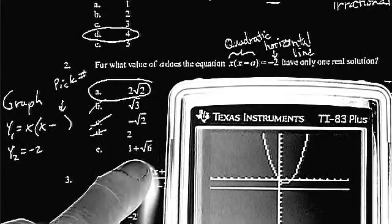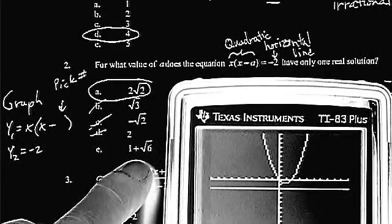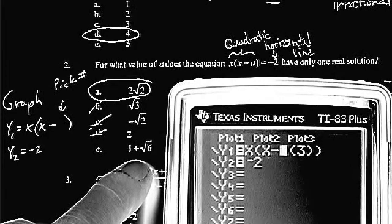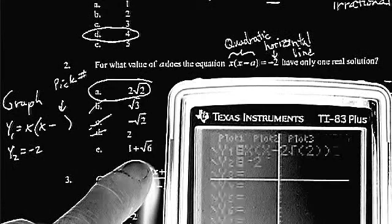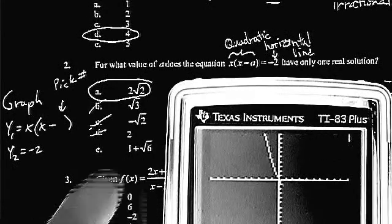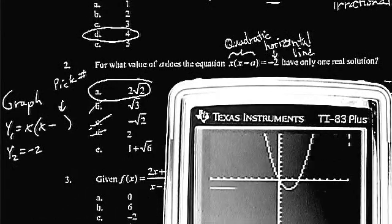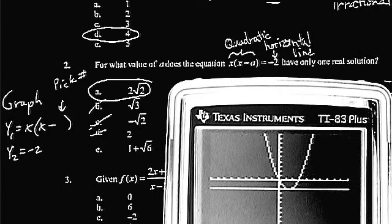1 plus radical 6 isn't going to work either, but if you try 2 radical 2, 2 square root 2, graph those, you're going to see that the line comes down.